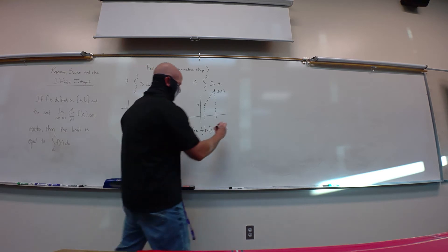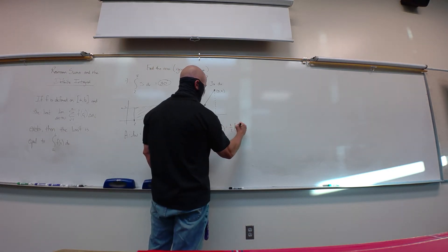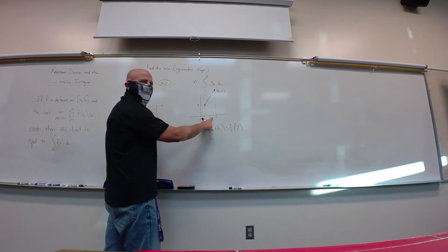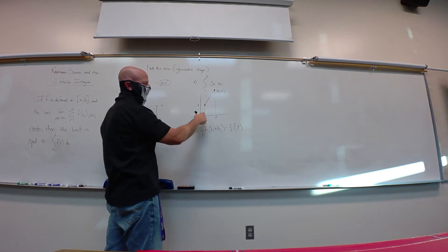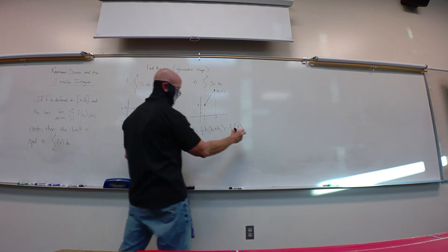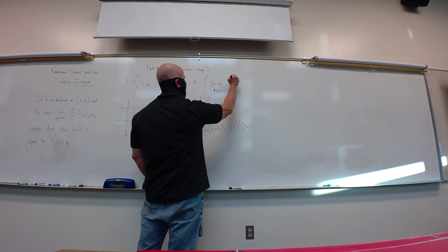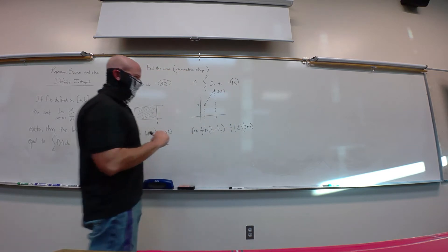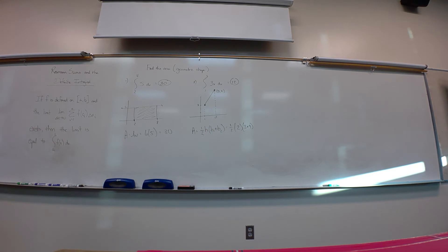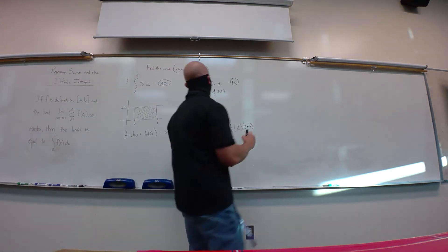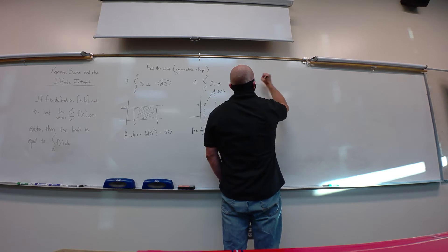So my bases here, let's see, 1/2 height would be 2, that's the delta x. Bases are the two parallel pieces. So you'd have 3 and 9. And that would give me 12.